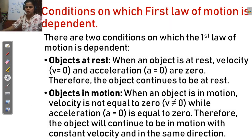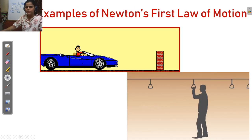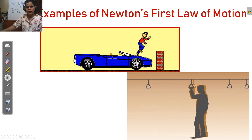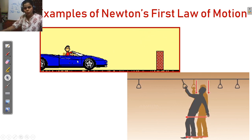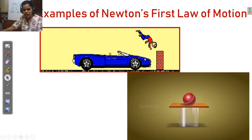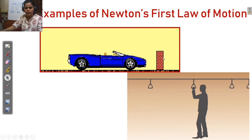These are two conditions for Newton's first law of motion. Until an unbalanced force is applied — for example, if a car is in motion and an obstacle appears, the car stops because the obstacle applies an unbalanced force.